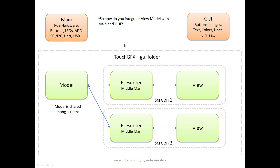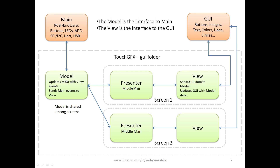So how do you integrate the TouchGFX view-model with the GUI and the hardware? The model is the interface to the hardware side — it updates the hardware with the view information, where the view got the data from the GUI. The model also takes information from the hardware like a button press or serial data and sends that to the view. The view updates the GUI and sends button presses or slider values back to the model, which then updates the main so it can process that information.